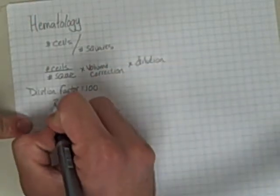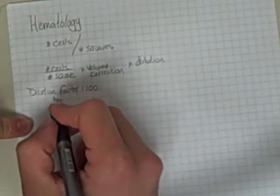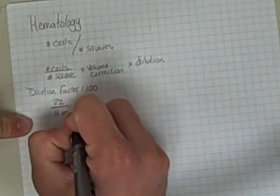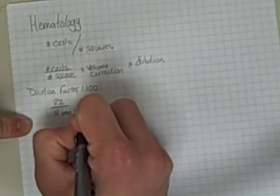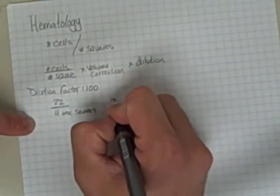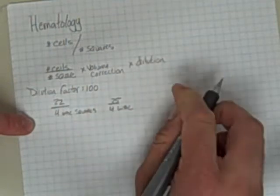It says you count 22 white blood cells in four squares on one side. So we're going to assume those are WBC squares, and I'll be more careful to tell you what they are. So 22 in four white blood cell squares on one side, and 25 in four WBC squares on the other side.